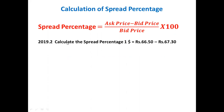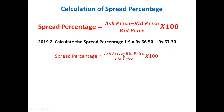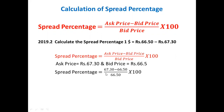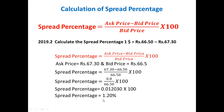Let us look at a problem which appeared in the 2019 exam for two marks. Calculate the spread percentage when one dollar equals 66.50 and 67.30. Here, the highest value 67.30 is the ask price (selling price) and the lowest value 66.50 is the bid price (purchase price). Applying the formula: (67.30 − 66.50) ÷ 66.50 × 100 gives a spread percentage of 1.20 percent.